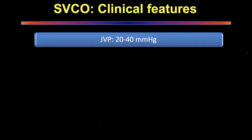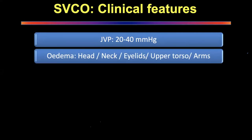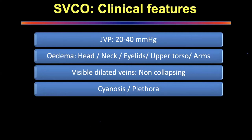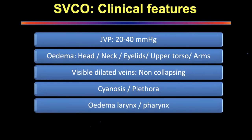The clinical features of SVC obstruction: normal JVP is five to seven centimeters. With SVC obstruction JVP will increase to 20 to 40 mmHg, resulting in edema of the head, neck, eyelids, upper torso, and arms. You will see grossly visible dilated veins that are not collapsing — on the chest wall, arms, or abdominal wall. There will be facial plethora particularly in sicker patients. The worst is edema of the larynx — patients become acutely unwell and present in respiratory distress.